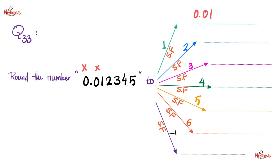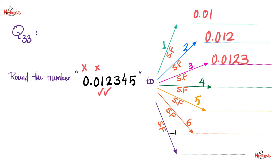Now try rounding 0.012345 to two significant figures. Zero is not significant, zero is not significant — let's start counting: here is 1, and here is 2. Be careful — look at the digit after the 2: it's a 3. You do not round up — leave the 2 alone. Next, three significant figures: the zeros do not count. Here is 1, here is 2, here is 3. Look after: it's a 4. Do I round the 3 up? No — leave alone. So the answer is 0.0123.